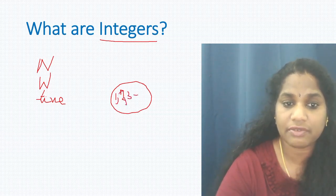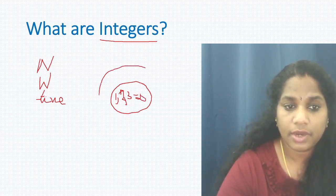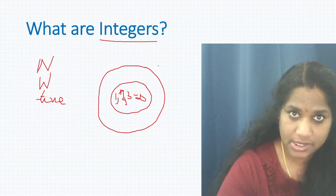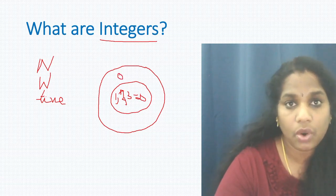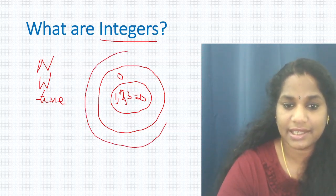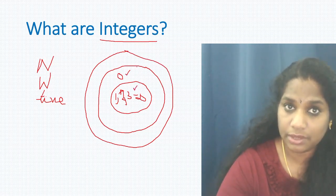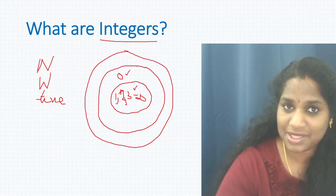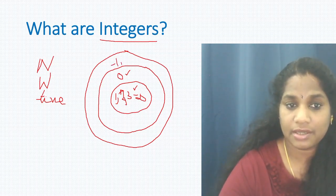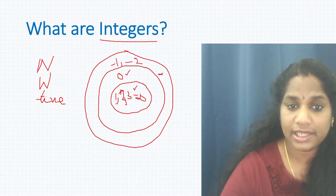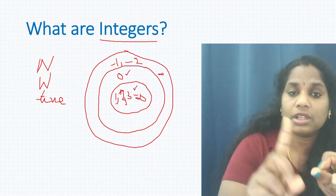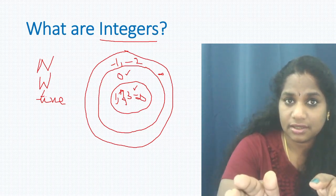This circle has all natural numbers starting from one till infinity. Whole numbers include all natural numbers along with zero, so the smallest whole number is zero. In the integers category, along with natural numbers and whole numbers, all the negative numbers are included — negative one, negative two, negative three, and so on till infinity.